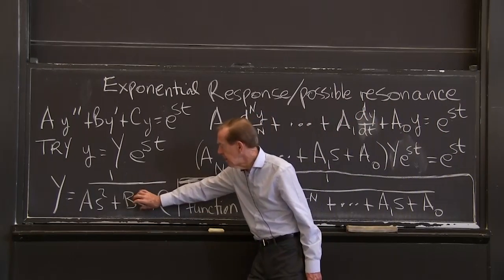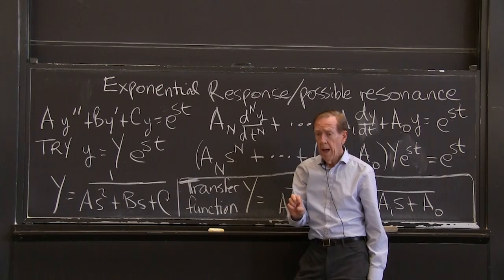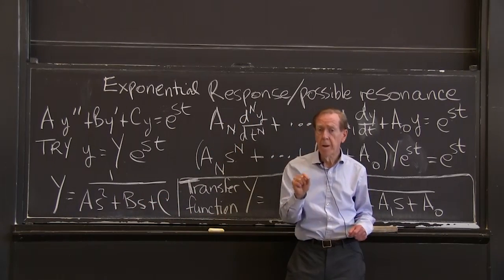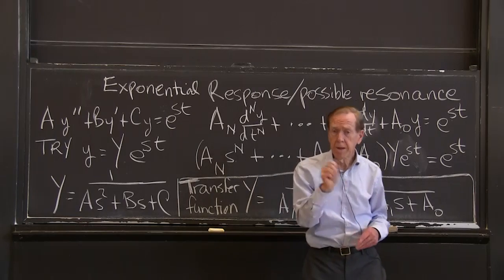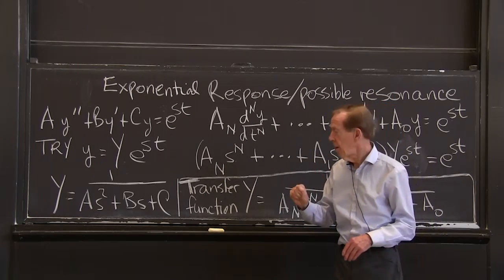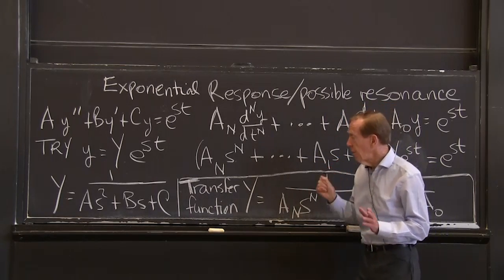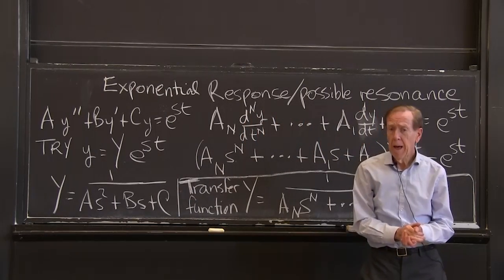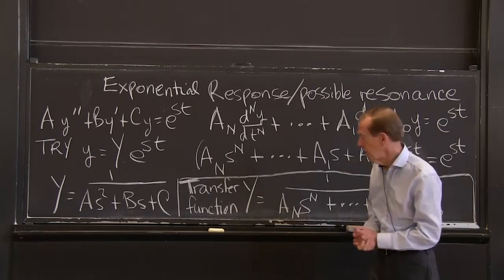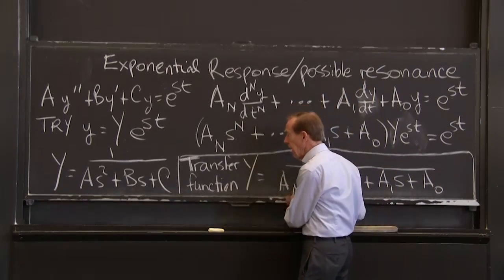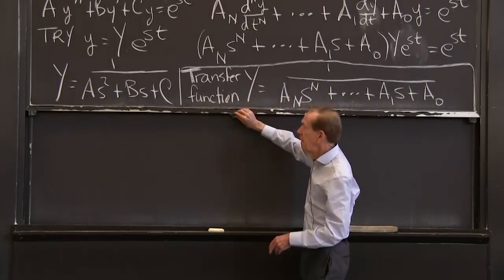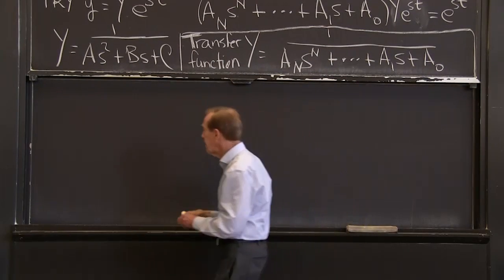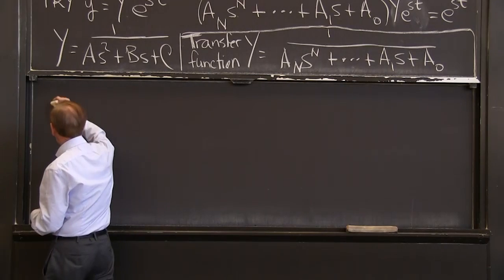So this is called resonance. Resonance is when the forcing exponent is one of the null exponents that make this 0. And there are two of those for second order equations. And there will be n different s's, s1, s2, up to sn, for nth degree equations. Those would be called those special s's. I could also call them poles of the transfer function.